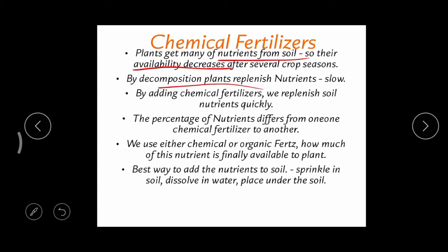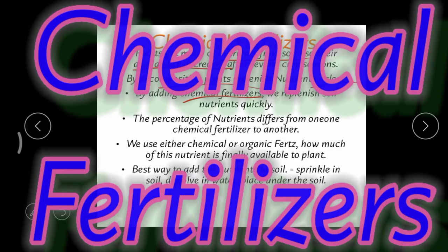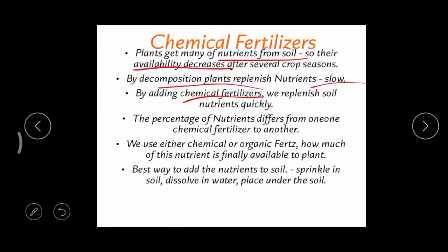By decomposing plant and animal materials, plants can replenish the nutrients, but that is a very slow process. So what is the alternate means? By using chemical fertilizers — these are ready-made fertilizers that we can directly supply to the soil. In this session we are going to deal with chemical fertilizers.